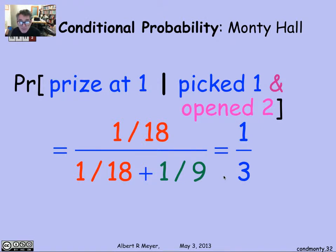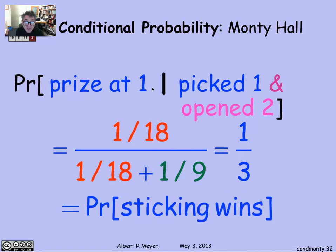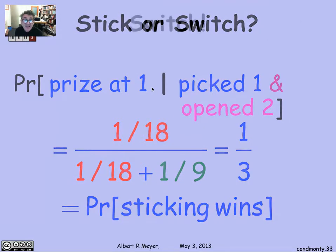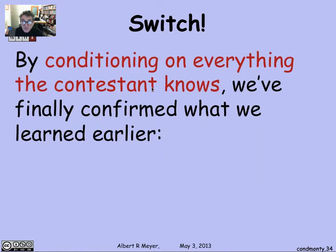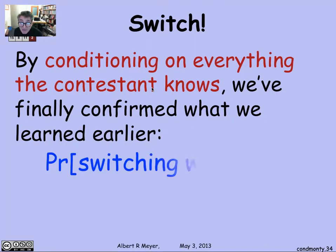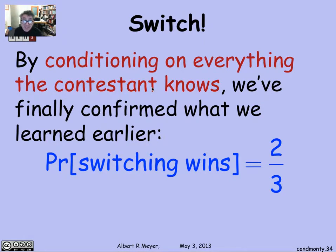Given that you picked door 1 and got to see what Carol did, the probability that the prize is at your door is only 1/3. That means if you stick, you only have a 1/3 chance of winning — you should switch, and if you do, you'll have a 2/3 probability of winning. When we condition on everything the contestant actually knows — what door they picked and what door Carol opened — we correctly confirm that the probability of winning by switching is 2/3.